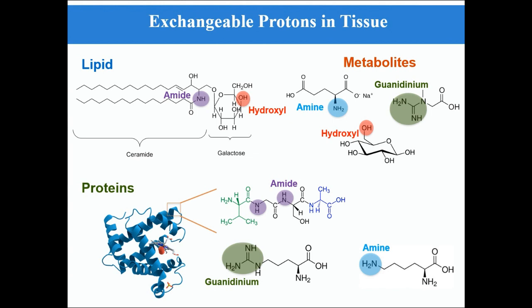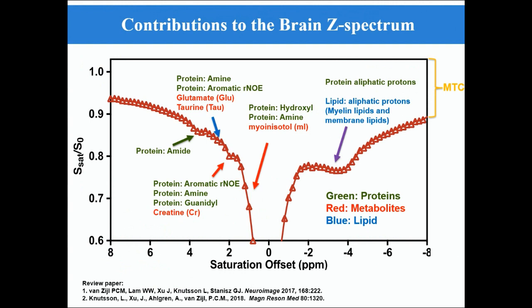As we know, there are many exchangeable protons in tissues and most of them come from lipids, metabolites, and proteins. Here is a conventional brain Z-spectrum. From the Z-spectrum we can see the strong MTC signal from macromolecules covers the whole range. In the negative side, there are contributions of aliphatic protons from both lipids and proteins. In the positive side, the situation is much more complicated because this region is crowded with contributions from proteins and metabolites such as creatine, taurine, and glutamate.